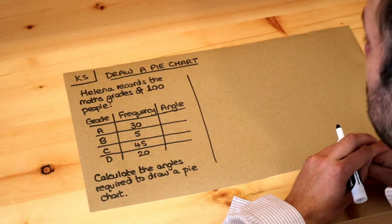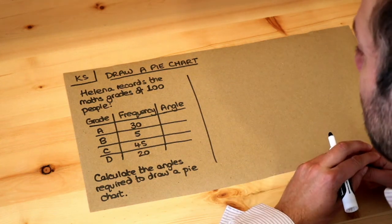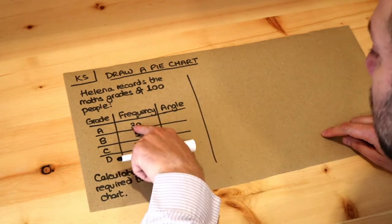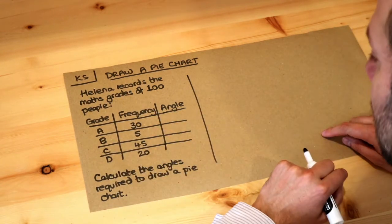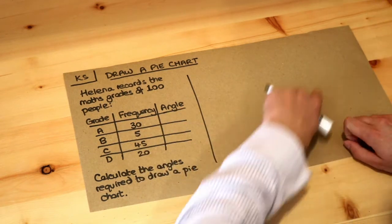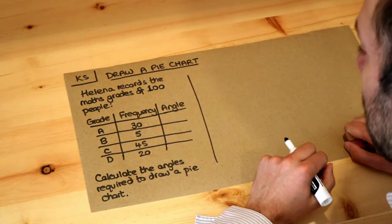The previous video we looked at how to interpret a pie chart and why we use pie charts. Previously we had to work out the frequencies in the pie chart, the number of people with each grade in this particular case, but this time we are given the frequencies and we need to find the angle so we can subsequently draw the pie chart.